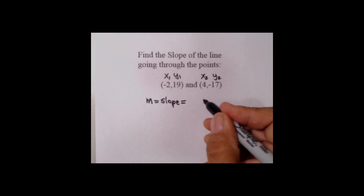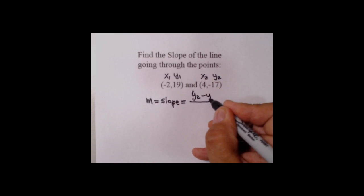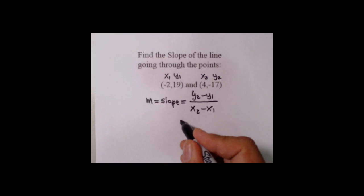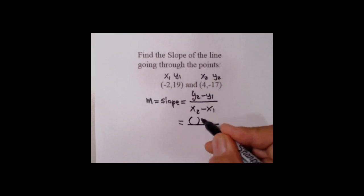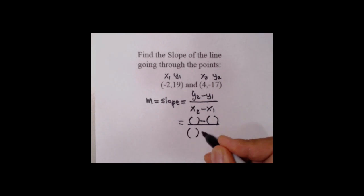The rise are the Y guys, so Y2 minus Y1 over X2 minus X1. Make your holes for all the X and Y values. Here's a hole for Y2, the minus from the formula, and a hole for Y1. Remember, the X's and Y's can have their own plus and minuses, but this minus in between is from the formula and we definitely need it. Downstairs the same thing: hole for X2, the minus from the formula, and a hole for X1.